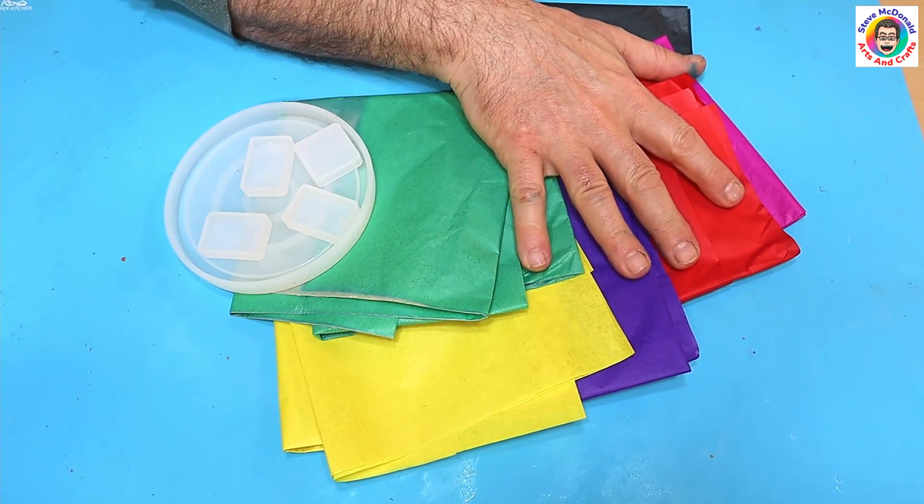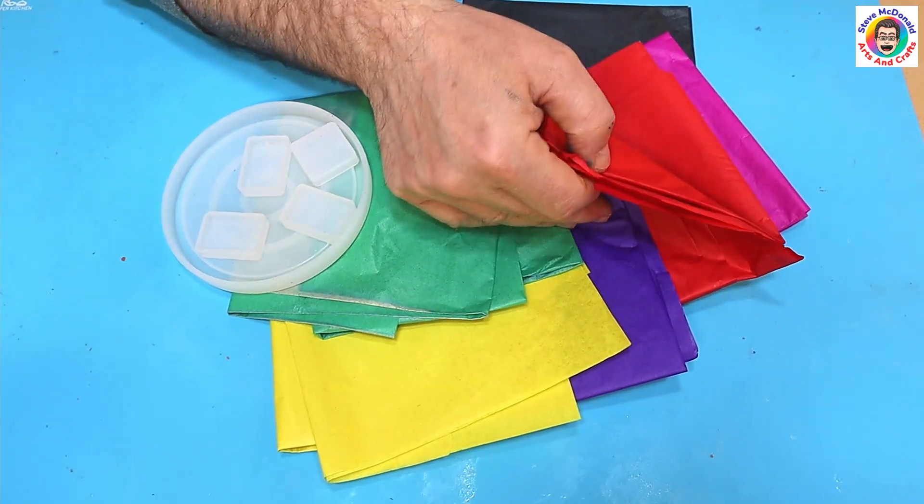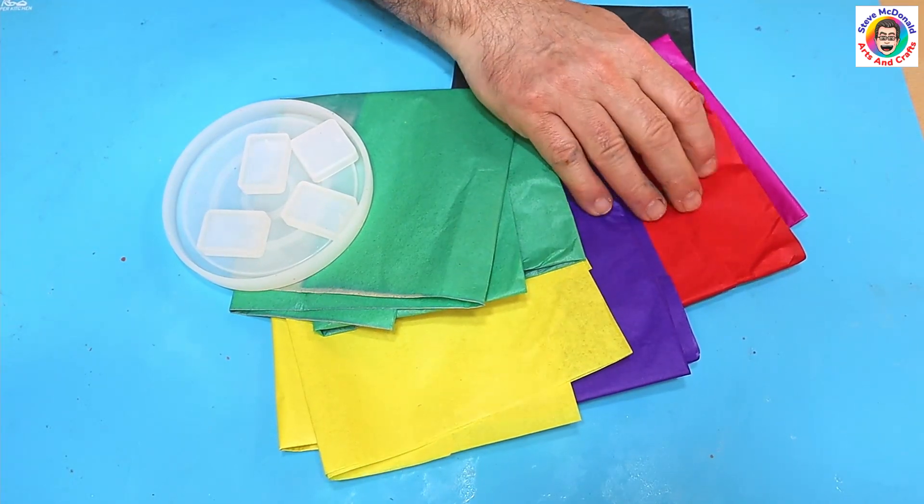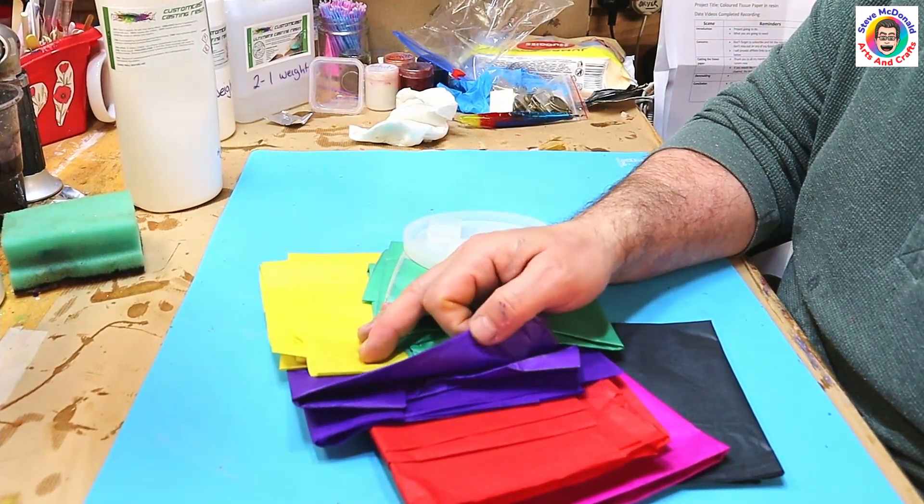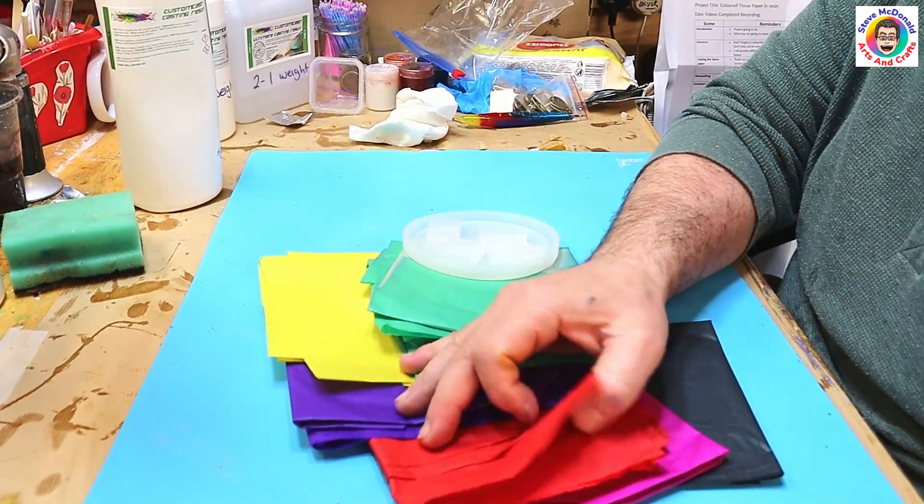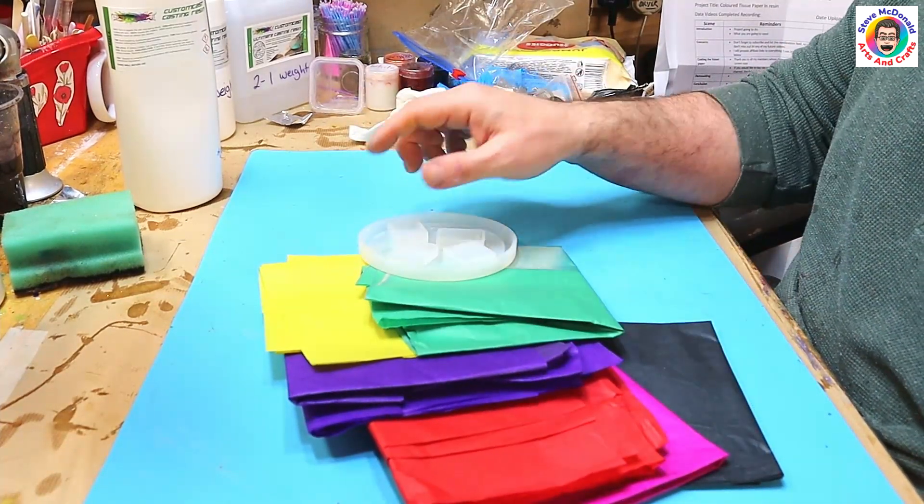Now I found this tissue paper when I was having a clear out and it must have been about 10 or 11 years old. I'm not sure it's going to work because I think the dye in the paper will run into the resin or it'll just go bleh. But we will see.